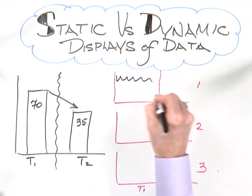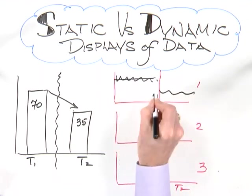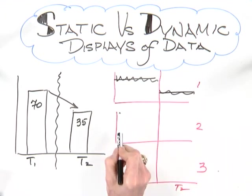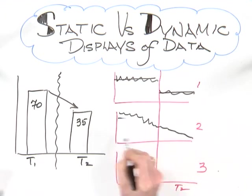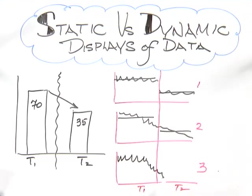Here is the data for unit one — it was here, and then it was here. Average of 70, average of 35. Unit two's data looked like this — average of 70, average of 35. And finally, unit three — its data looked like this, it went like this, but now it has gone like this. Average of 70 here, average of 35.